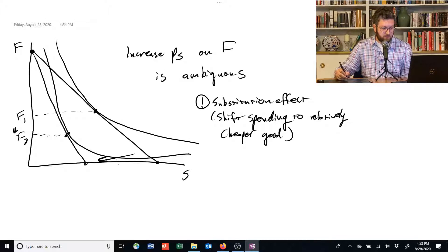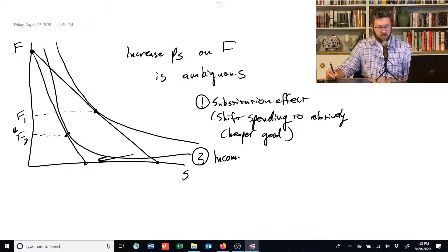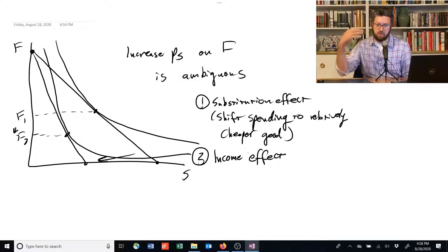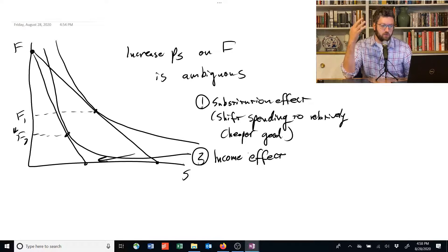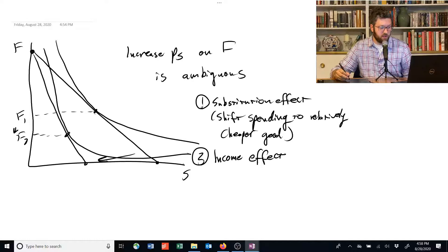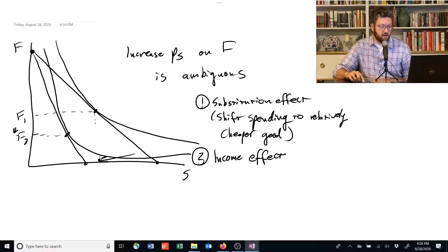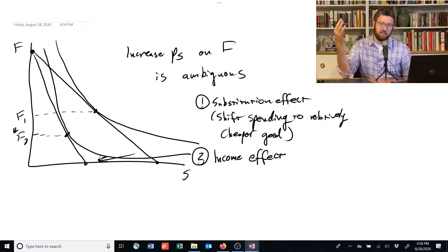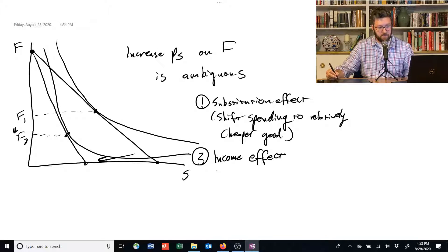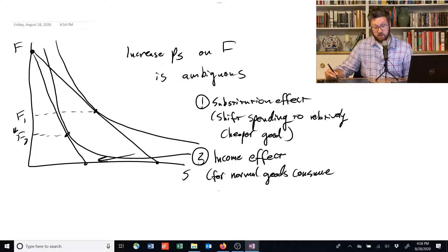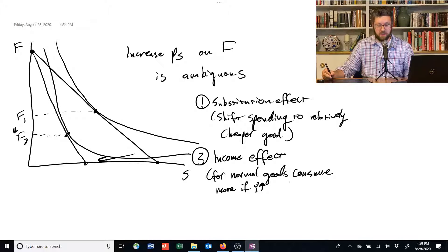But there's a second effect too, called the income effect. And this has to do with the observation that when the price of shelter went up, this person can now afford less food for any given amount of shelter. So for example, if this person continues to consume the same amount of shelter at this new price, they can't even afford it. And they can't afford any food either. And so even though it's the price of shelter that's changed, it's kind of like they've lost income in general. So the income effect is going to be for normal goods. You consume more when you have more income and less when you have less. So consume more if Y goes up, less if Y goes down.